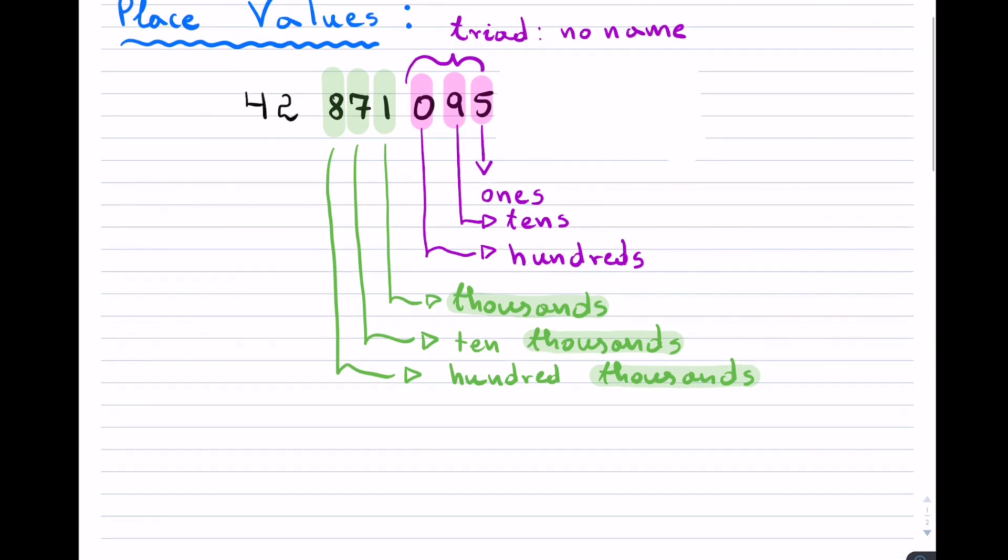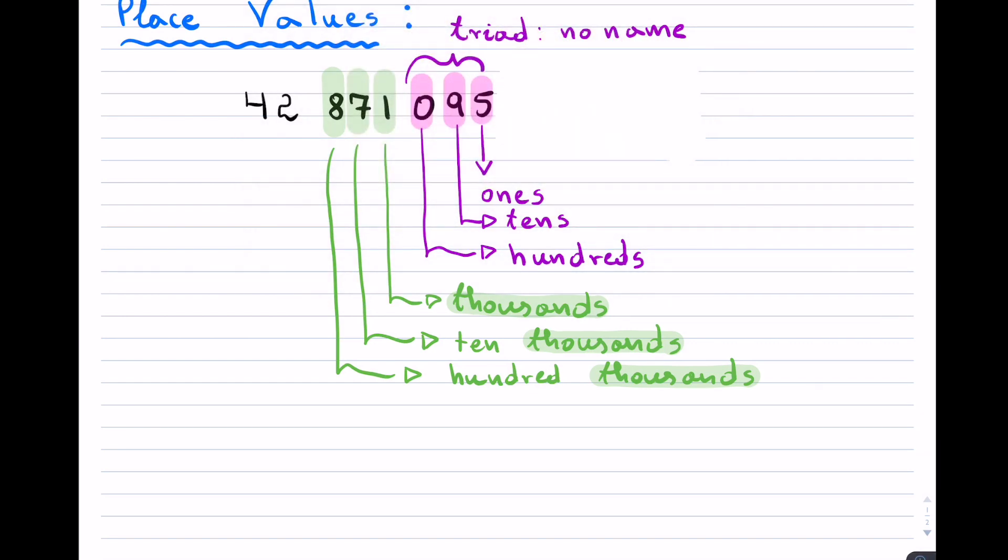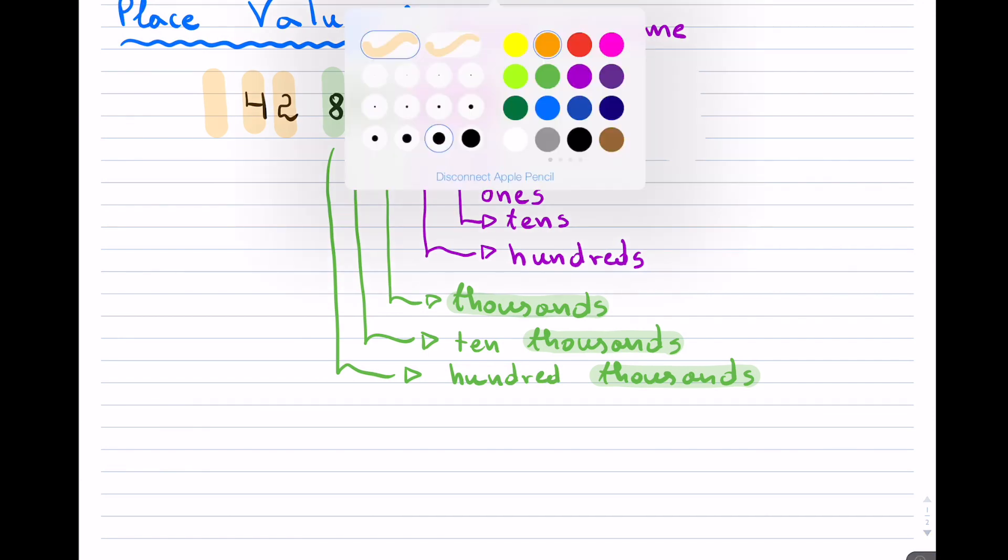Once you finish with the thousands triad, you will get into the millions triad. So right here, you will have the millions. Then you will have the ten-millions. And if we had another digit, it would have been hundred-millions. And then it continues on.